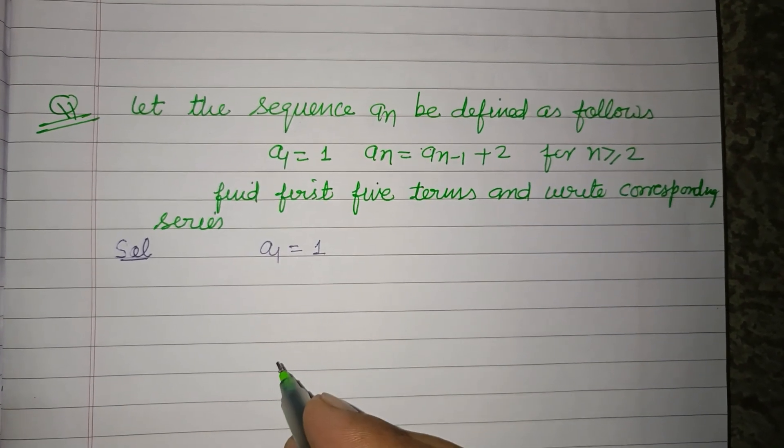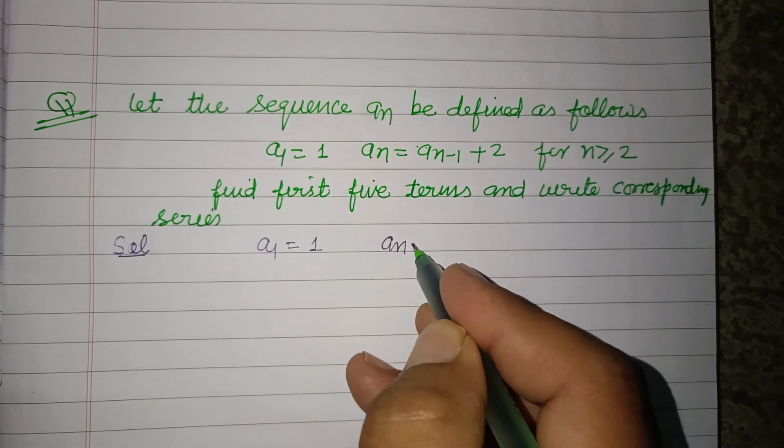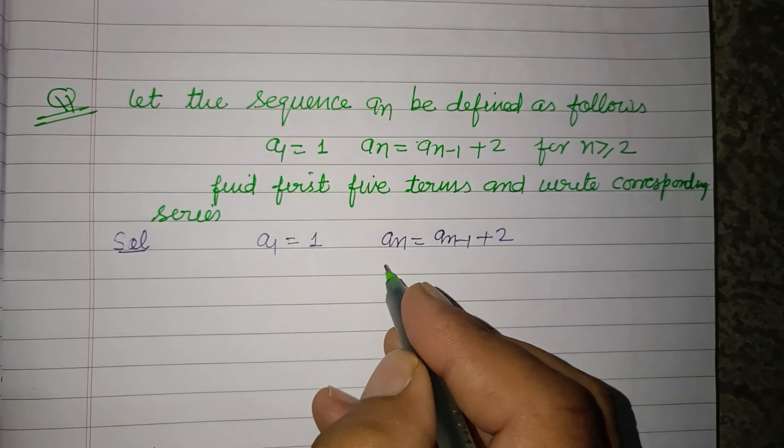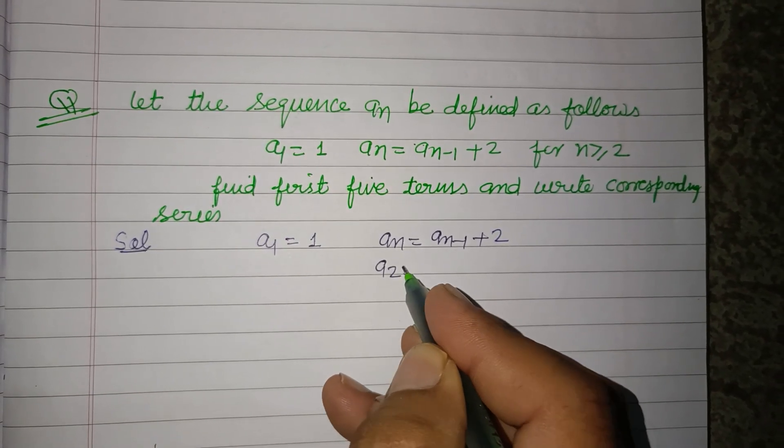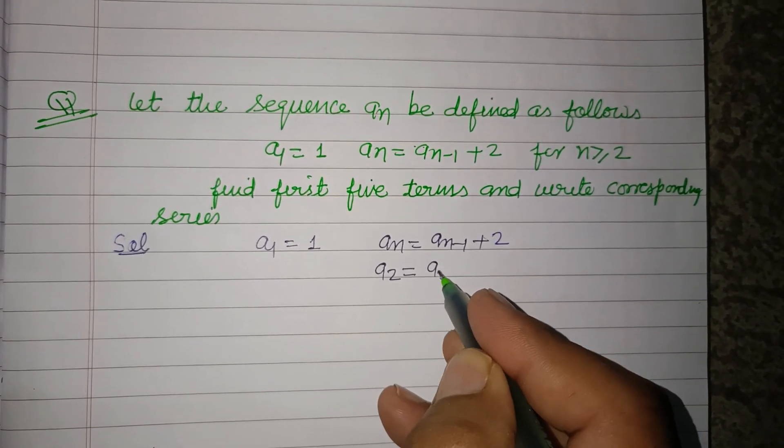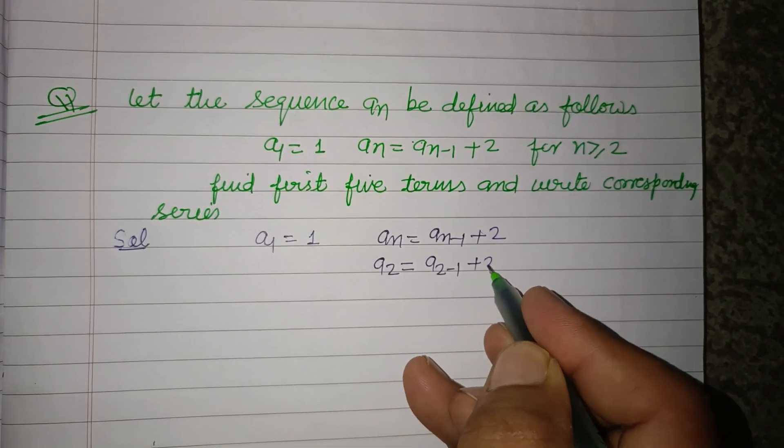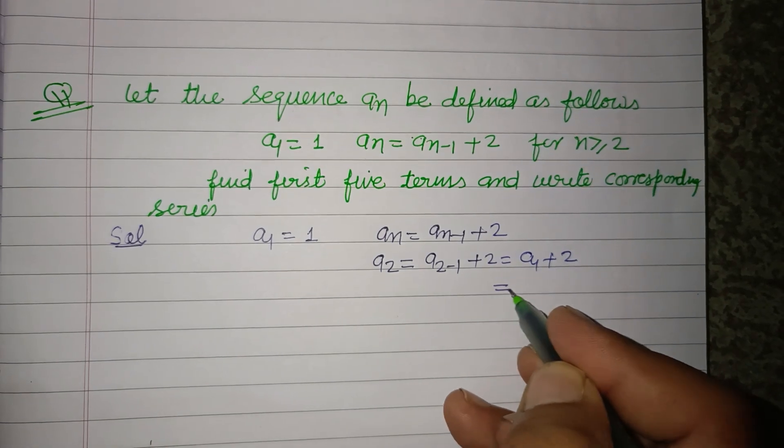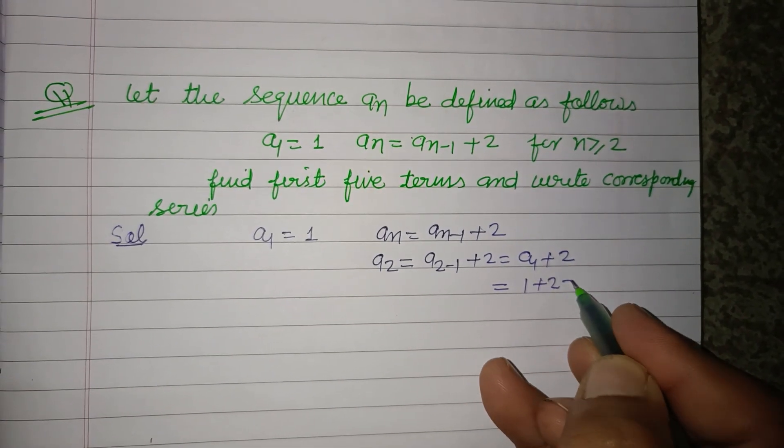aₙ = aₙ₋₁ + 2. So put n = 2 for the second term. This becomes a₂₋₁ + 2, or a₁ + 2. a₁ is 1, so 1 + 2 = 3.